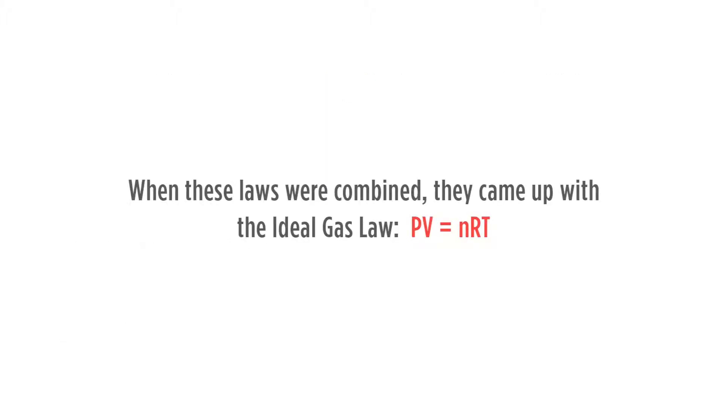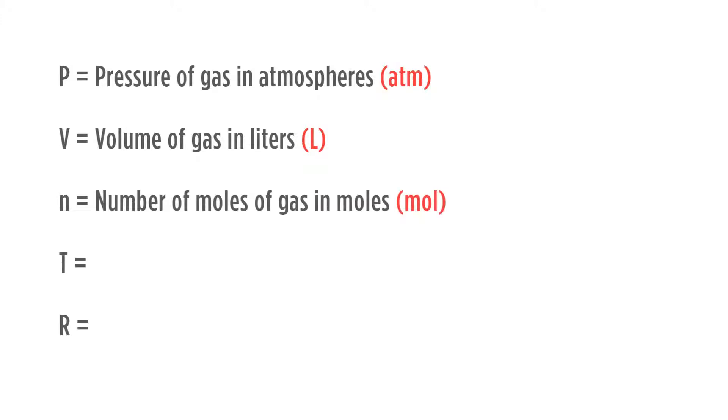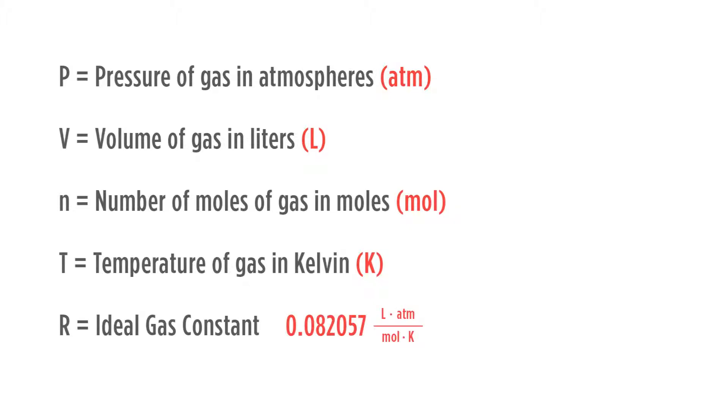When these laws were combined it came up with the ideal gas law, PV equals nRT. P is pressure of the gas in atmospheres, V is volume of the gas in liters, n is for the number of moles of the gas in moles, T is for temperature of gas in Kelvin, and R is the ideal gas constant.